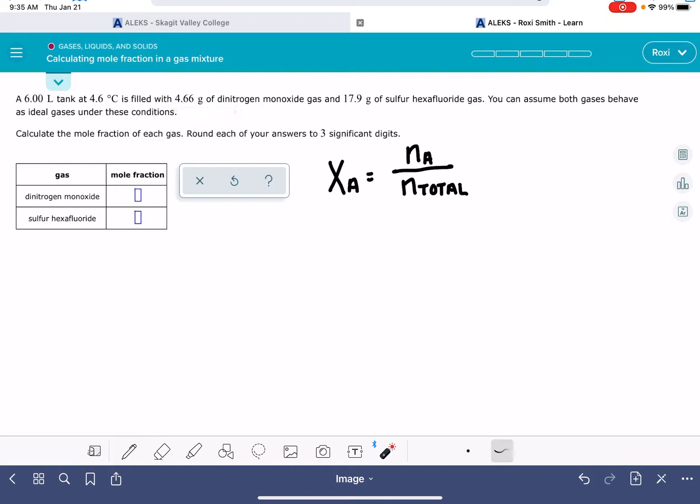Now one of the things that might be tricky for this problem is if you're not comfortable with the names and don't know what the formula is from the name. If you're looking at these names and feeling uncertain about what they represent, just Google it. Dinitrogen monoxide is N2O and sulfur hexafluoride is SF6.